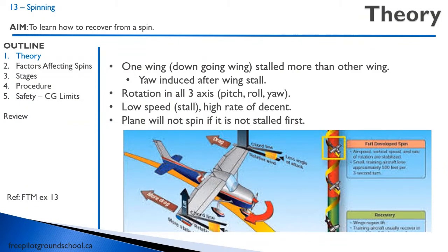To begin with, let's talk about some theory of spinning. In a spin, one wing — the down-going wing — is stalled more than the other wing, the up-going wing, and it is caused by yaw that is induced after the wing is stalled. So one wing is going to be stalled more than the other. There is rotation in all three axes: pitch, roll, and yaw, which becomes pretty apparent in the video.